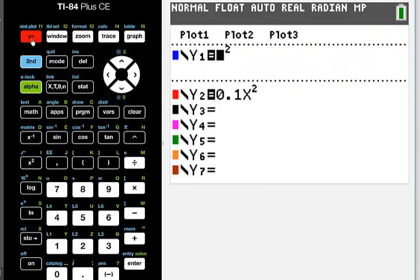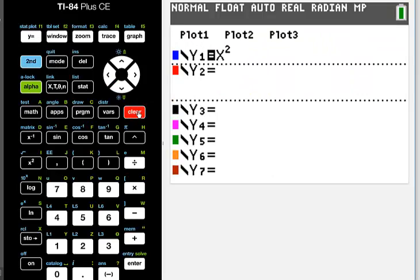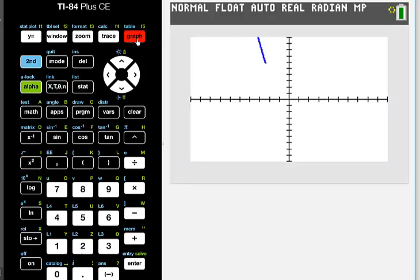The one last one on the handout was negative 2x squared. What if I make the a negative? What is that going to do to the parabola?